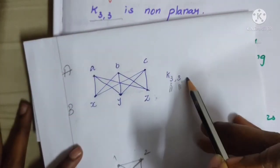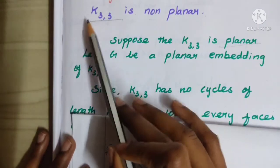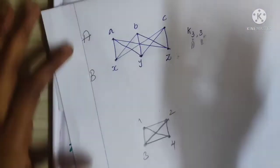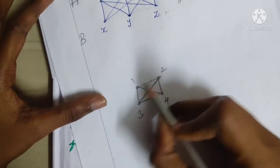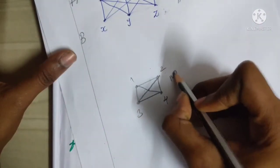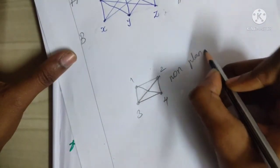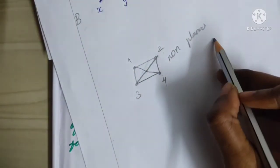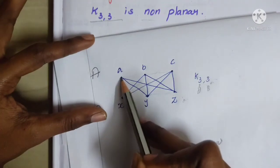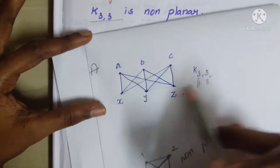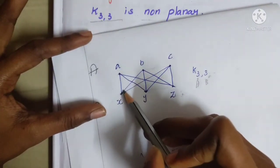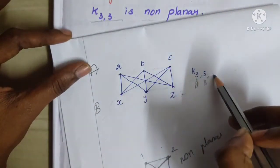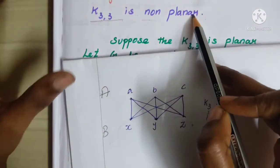Let's say this graph is a K3,3 graph. If you get the question that K3,3 is non-planar — it is non-planar. A crossover graph is non-planar. These two edges are crossover, so this is a non-planar graph. This is K3,3 and it's crossover, so K3,3 is non-planar.